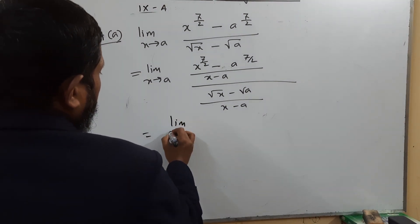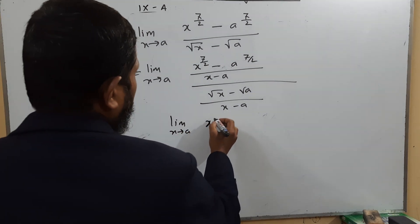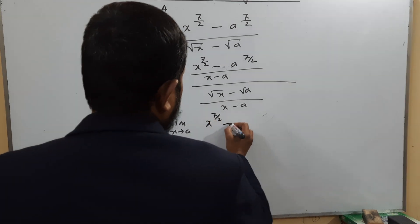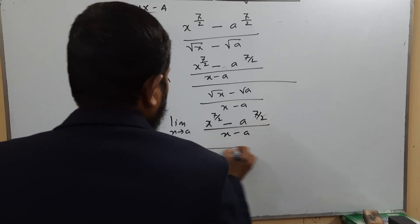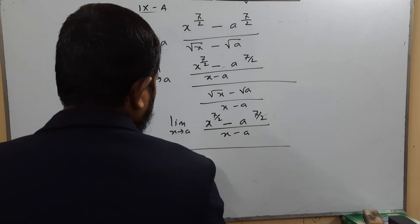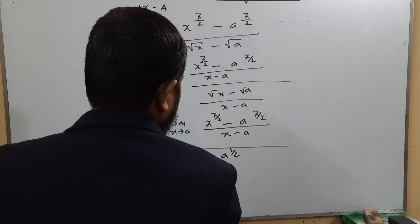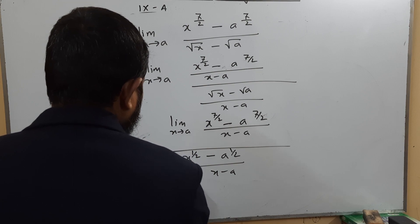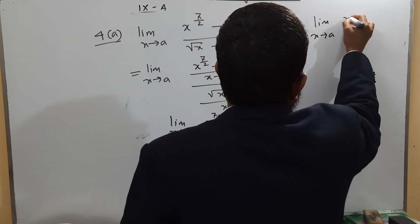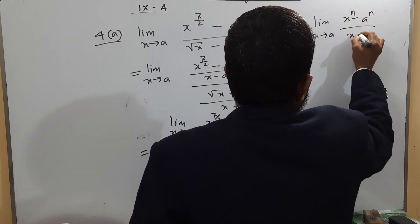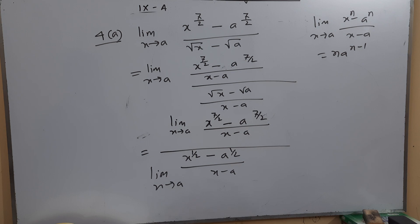We apply the formula: limit x tends to a of (x^n − a^n)/(x − a) = n·a^(n−1). For the numerator part, n = 7/2, so we get (7/2)·a^(7/2 − 1). For the denominator part, n = 1/2, so we get (1/2)·a^(1/2 − 1).